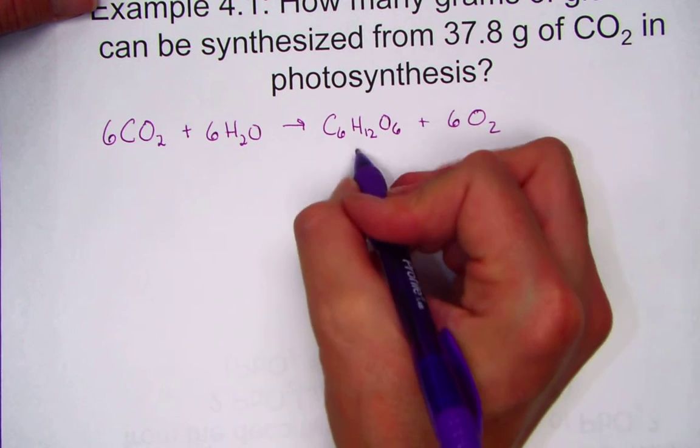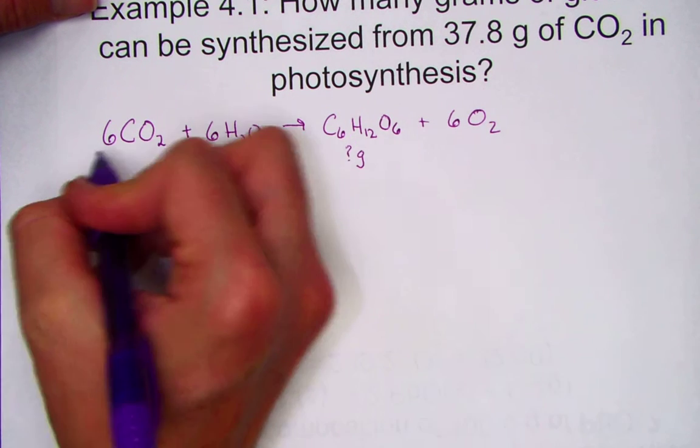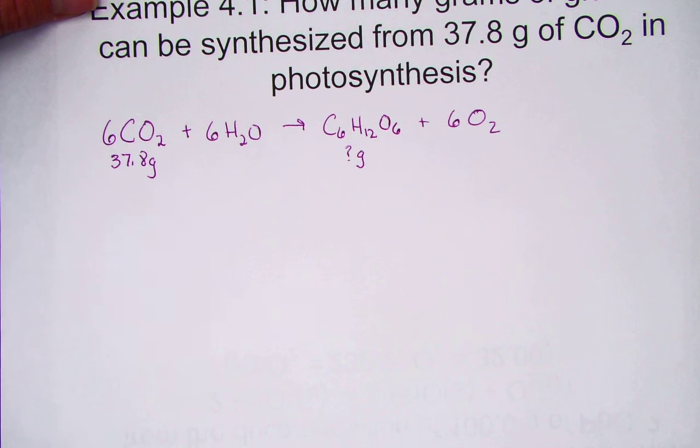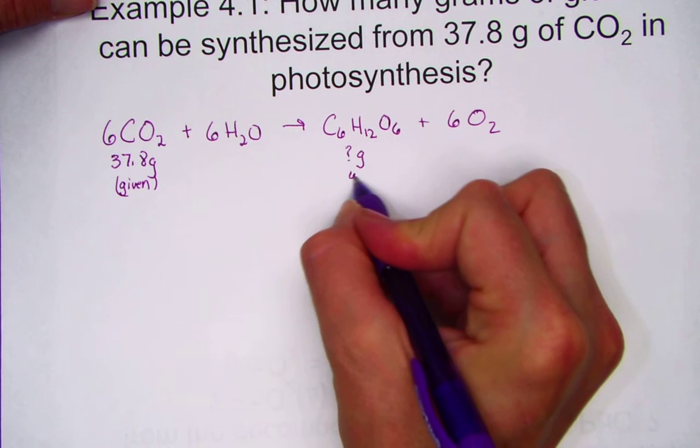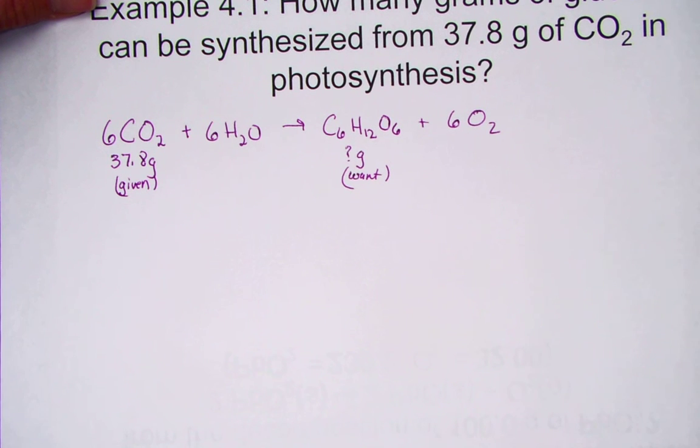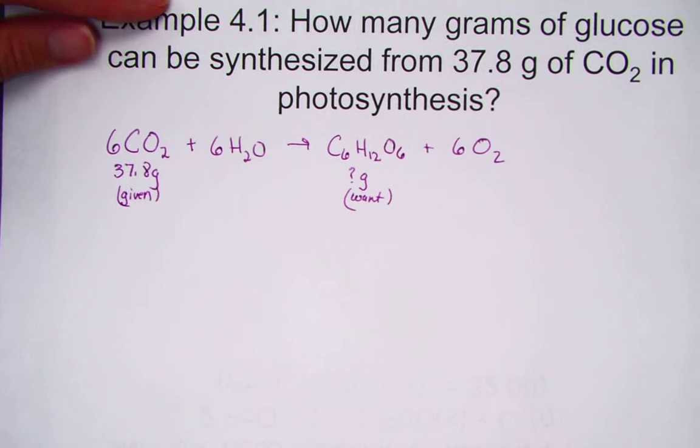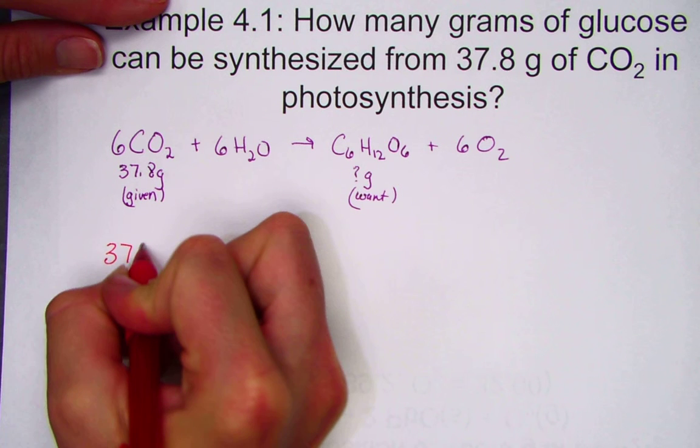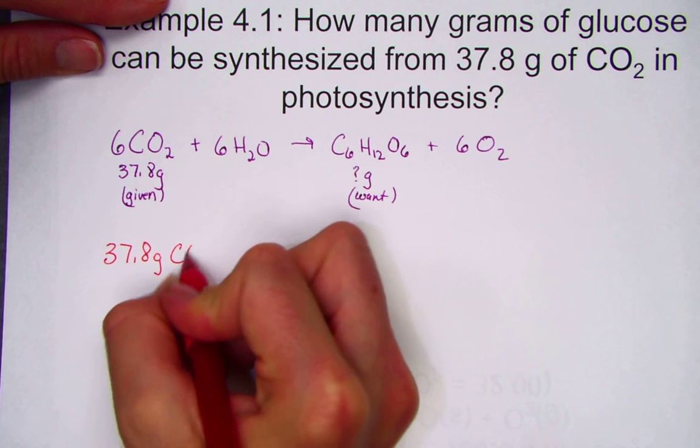It would like us to calculate how many grams of glucose can be made. If I started with 37.8 grams of carbon dioxide, our given is a mass of CO2. What we want is the mass of glucose. Given a mass, calculate a mass. The three steps to stoichiometry. We will begin, as always, by writing down the number, 37.8. The unit is a gram and the label is CO2.